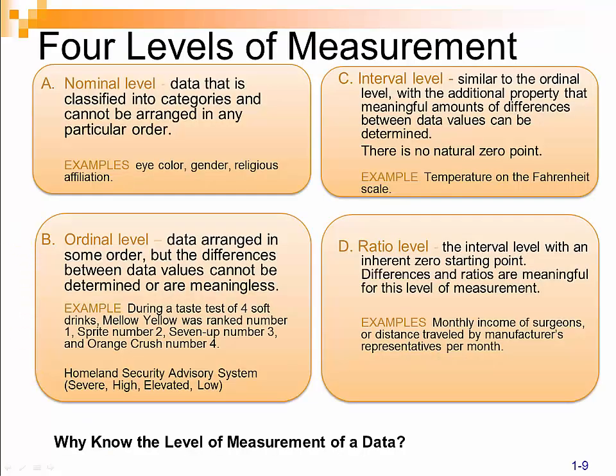When we break down our values, we have four different levels of measurement that we work with in statistics. The nominal level is when data is classified into categories and cannot be arranged in any particular order. An example would be the flavor of ice cream — there is no relevance to ordering, and there is no greater than or less than among ice cream flavors such as strawberry, chocolate, or vanilla.